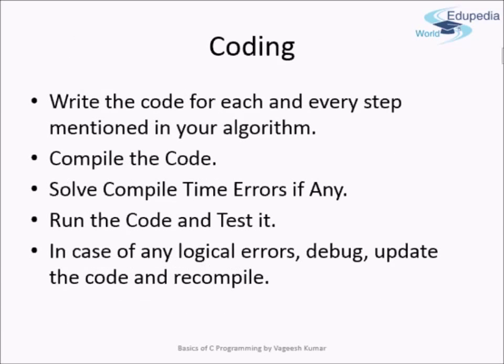The next step is coding. You write code for each and every step mentioned in your algorithm, referring to the algorithm while writing. After writing your code, you compile it — you invoke your compiler, tell it the source file, and it reads the code line by line, evaluates it for syntax errors, and reports them. You must correct any compile-time errors and compile again.